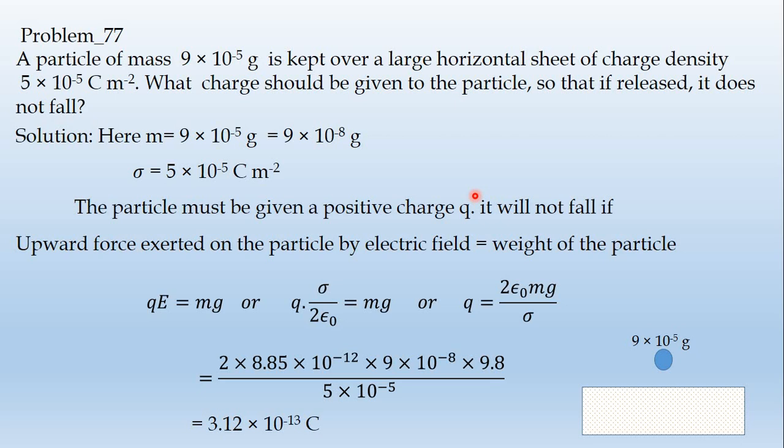Force equals mass times acceleration. qE equals mg. The electric field E for a sheet is sigma divided by two times epsilon naught. So q times sigma divided by 2 epsilon naught equals mg.